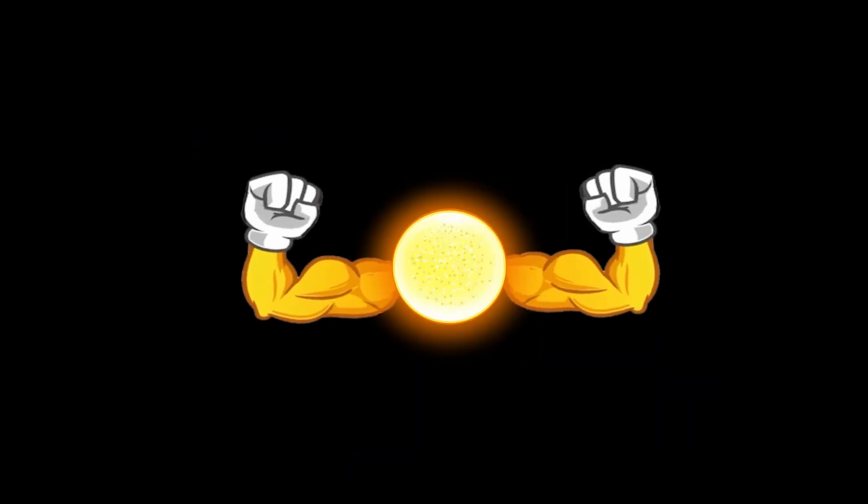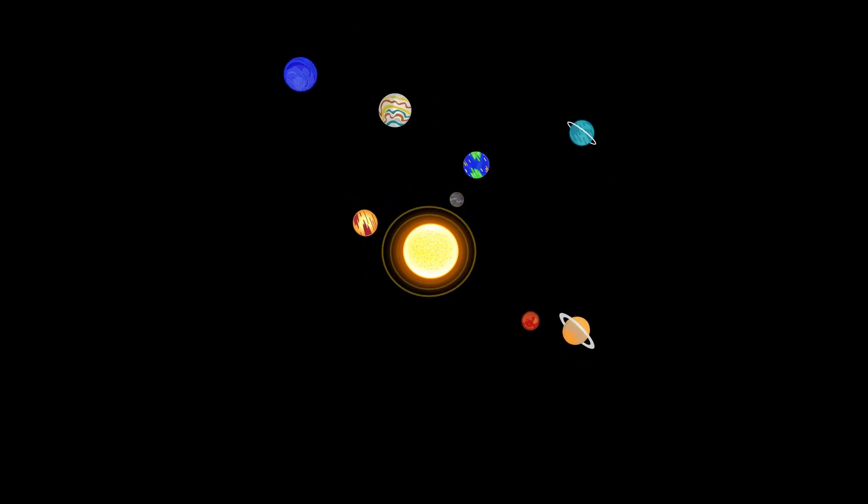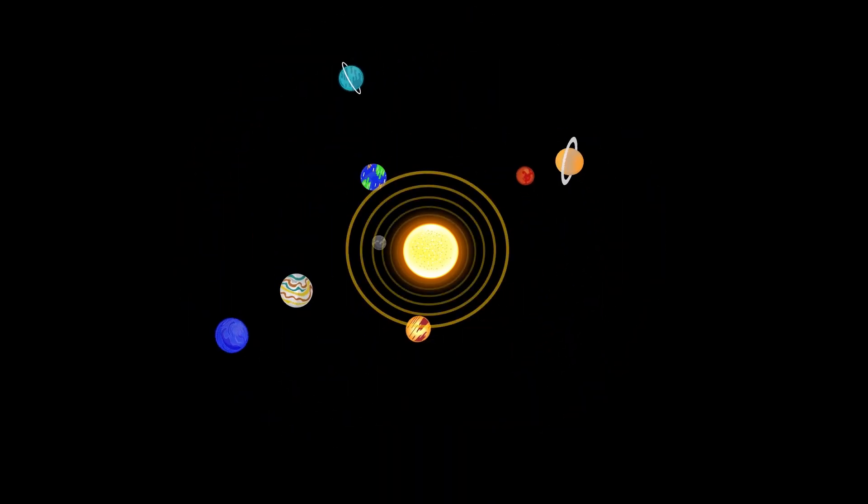Because it is so massive, the sun exerts a lot of gravity, or pull, on the planets, enough to make them orbit around it.